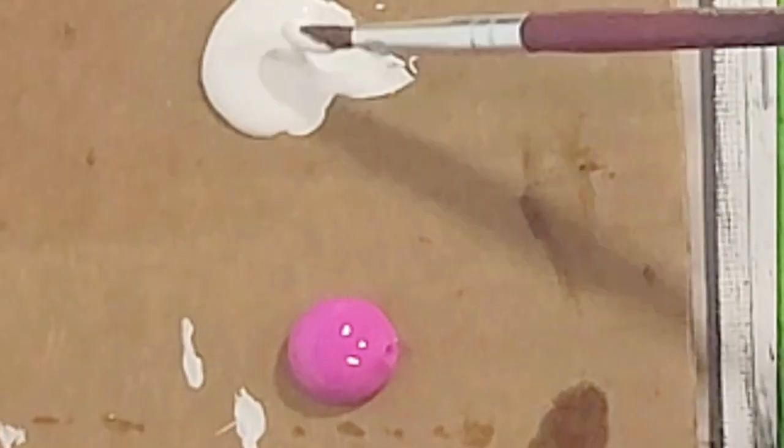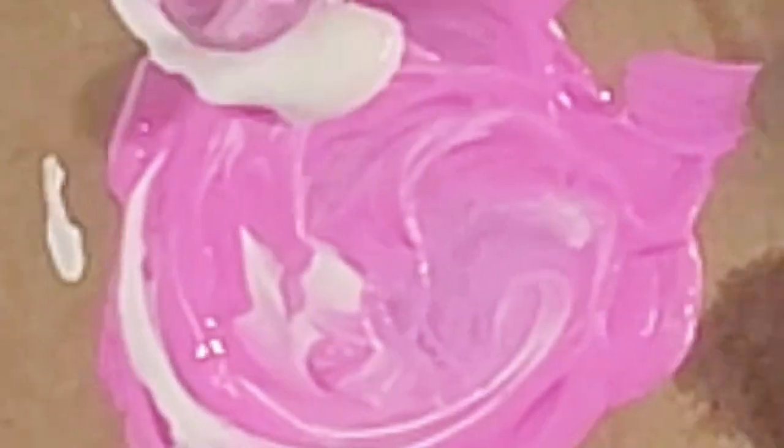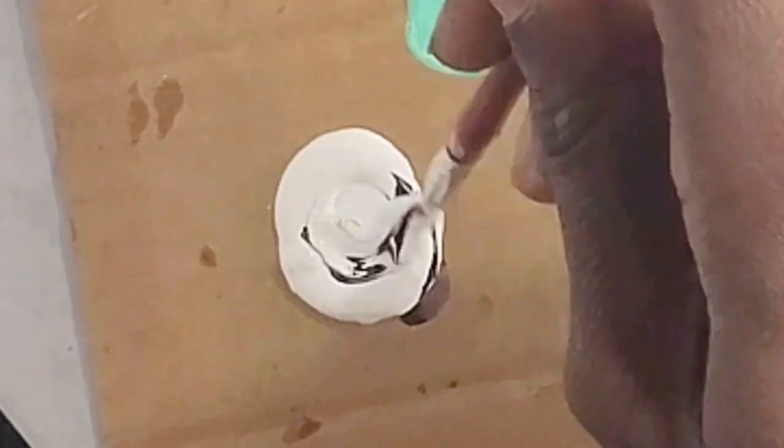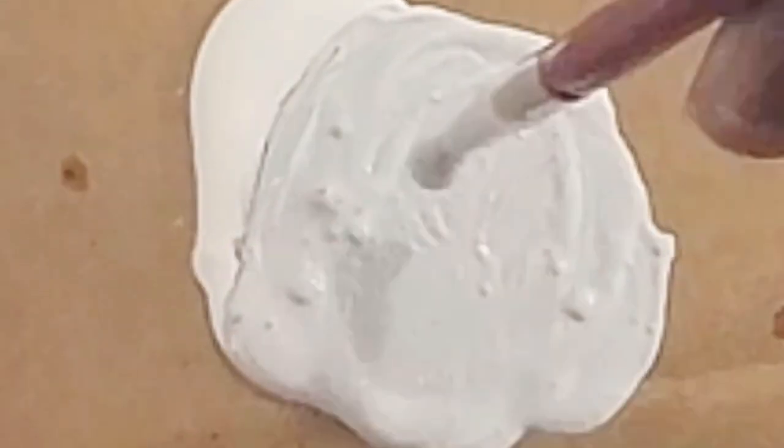Mix equal parts white and fluorescent peach red, plus a dab of crimson red. Put down phthalo blue. Next, mix equal parts white and emerald green. Put down lemon yellow and mix a touch of black into the white to make a whitish gray color.